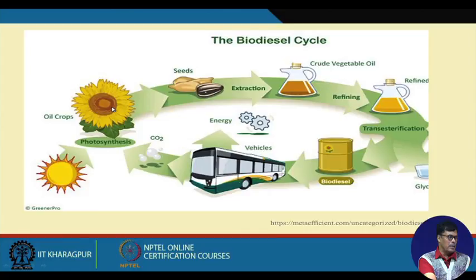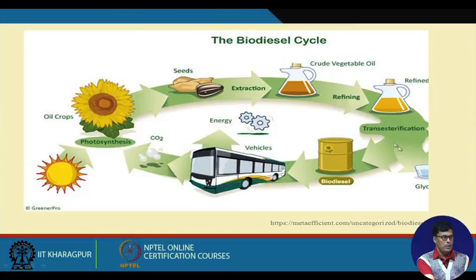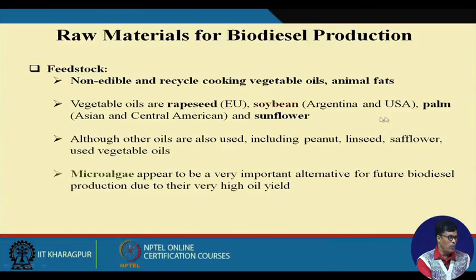The raw materials used for biodiesel production are non-edible and recycled cooking vegetable and animal fat. Vegetable oils largely used are rapeseed oil, soybean, palm, and sunflower. Although other oils are also used, including peanut, linseed, and safflower, these are used as vegetable oils.